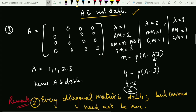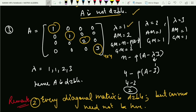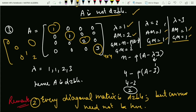Moving to the third example: a 4×4 diagonal matrix. The diagonal elements are the eigenvalues. λ=1 has AM=2, λ=2 has AM=1, and λ=3 has AM=1. When AM is 1, GM is automatically 1. For λ=1 with AM=2, GM = n − rank(A − I). Subtracting 1 from all diagonal entries gives entries 0, 0, 1, 2, so the rank is 2. Thus GM = 4 − 2 = 2. So AM equals GM for λ=1.